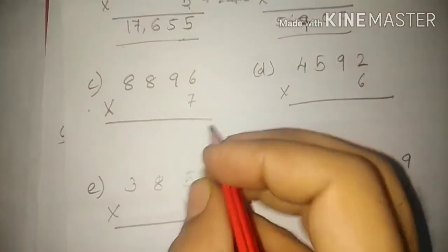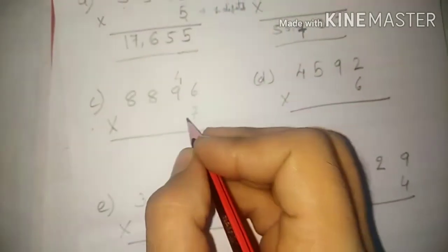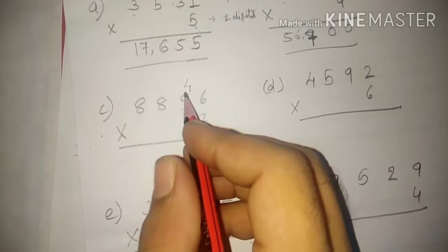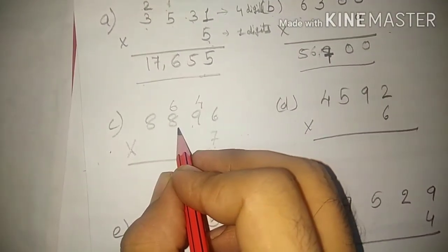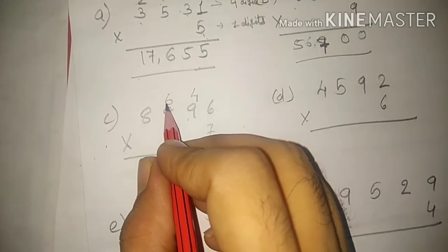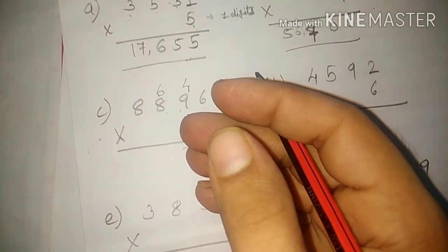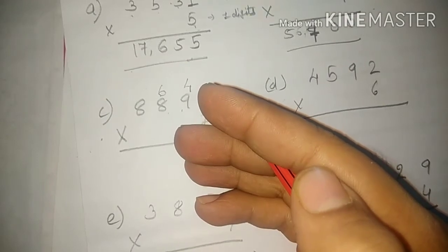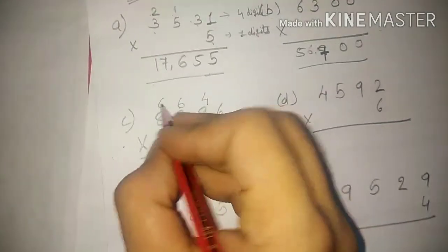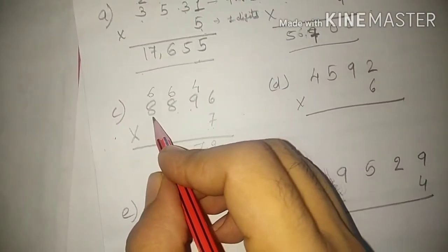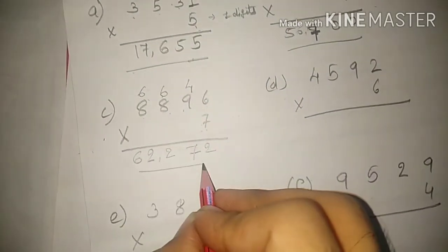The next one: 7 sixes are 42, 4 will go up as carry. 7 nines are 63, 63 plus 4 would be 67. 7 eights are 56, 56 plus 6 — if you do not know how to calculate it, count on your fingers: 57, 58, 59, 60, 61, 62. So 6 will go up, and then 7 eights are 56, plus 6 is 62. This is your answer, students.